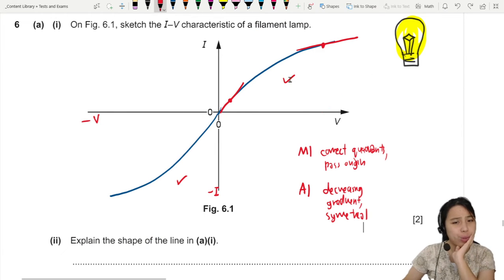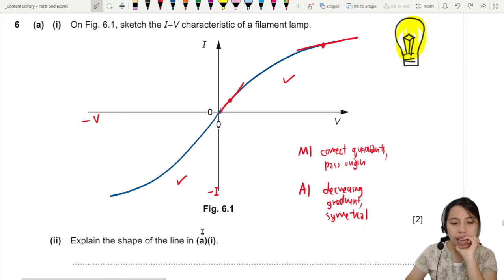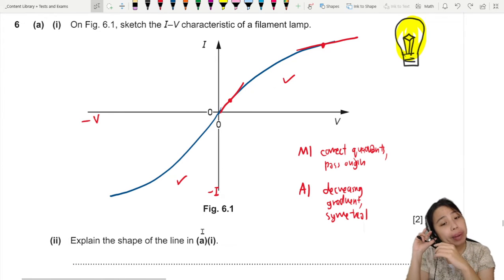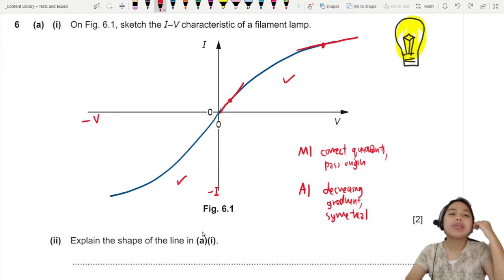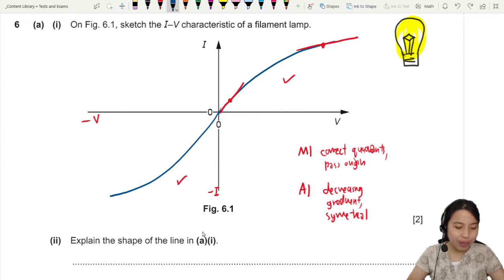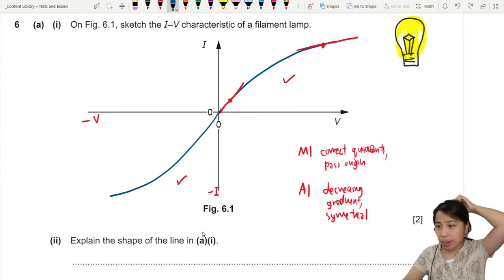Try to draw the best you can to this kind of shape. So what next? We need to explain the shape of the line in A1. Explain now. Why like that? You go check out the electricity videos. There are some facts we need to know about filament lamps.